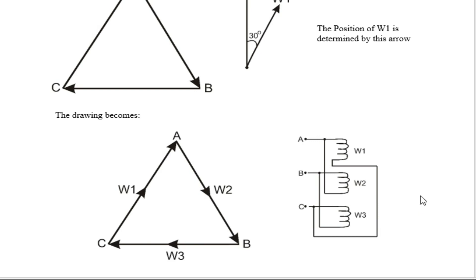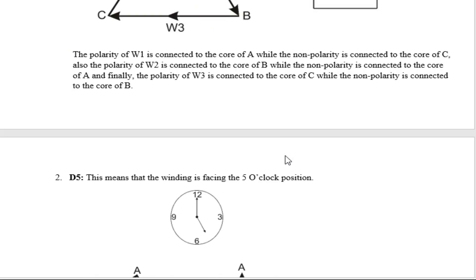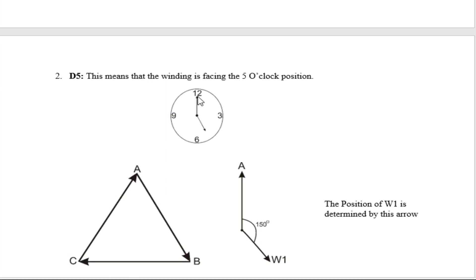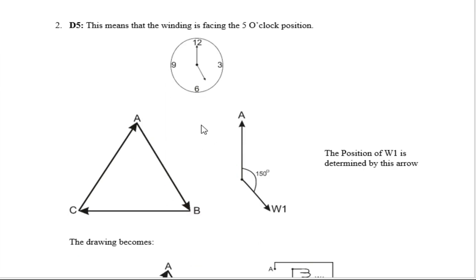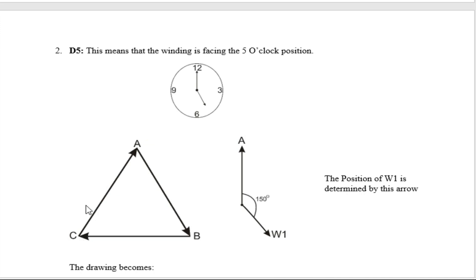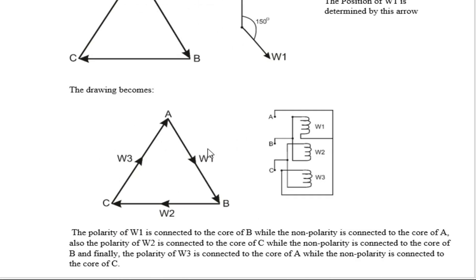This is the diagram of a D1 connection of a Delta at one o'clock. The next one is D5. D5 signifies five o'clock position. If you look at it, this is your Delta connection at five o'clock — exactly how it is on your clock — meaning they are 150 degrees apart. Looking at it carefully, it represents your B connection, so when you superimpose this onto B, your W1 will be here, W2 will be here, and W3 will be here.